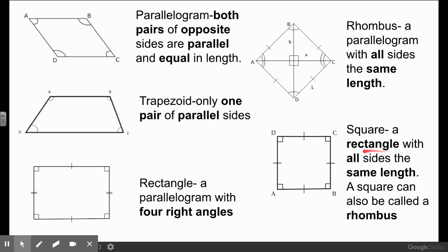A square is a rectangle because a rectangle has four right angles, and so does a square. The rest of the definition says that all sides measure the same length — that is the reason a square can be a rectangle. But a rectangle cannot be a square, because a rectangle has two short sides and two long sides, they don't all measure the same length. A square can also be called a rhombus because a rhombus has all sides measuring the same length. The only difference is a rhombus can't always be called a square, because sometimes when a rhombus is stretched out it has two obtuse angles and two acute angles.